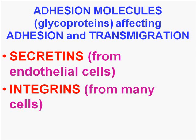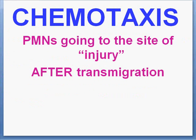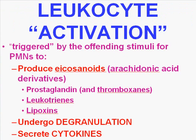After the white cells have escaped from the blood vessel and are now outside of it, they go to the site of injury. This process is called chemotaxis. There are a wide variety of cytokines which govern this, which we'll talk about later.